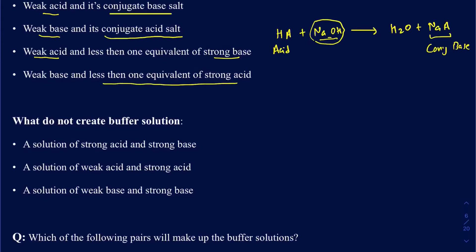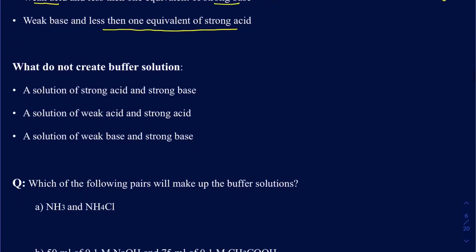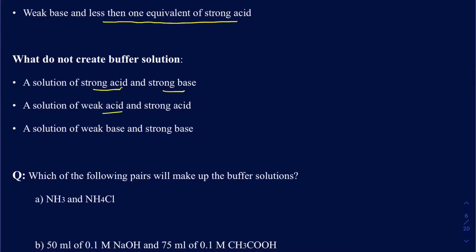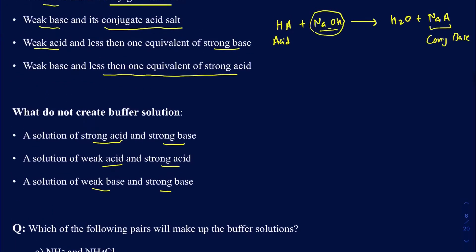Let's talk about what does NOT create a buffer solution. Having a strong acid and strong base combination is a no — you don't create a buffer solution with that. Having a weak acid and a strong acid combination — that's like having an acid and adding another acid — that's not going to create a buffer. Having a weak base and a strong base also will not create a buffer solution. And if you're adding a weak acid with a strong base and you go over one equivalent of that strong base, you're not going to create a buffer solution. It's extremely important to identify your acids and bases when trying to identify buffer solutions.